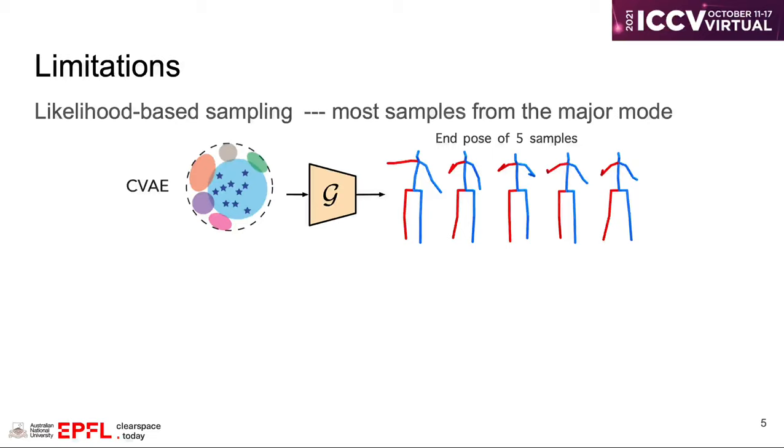However, the typical generative model such as conditional VAE often produces very similar samples. One reason is that the sampling process is purely based on the motion likelihood, which means most of the samples will come from the major mode of the distribution, as the region shown in blue.